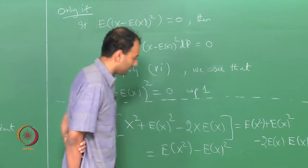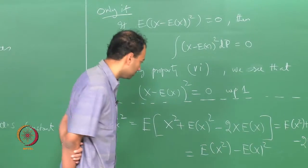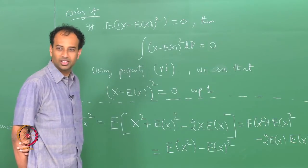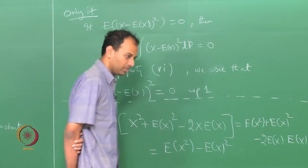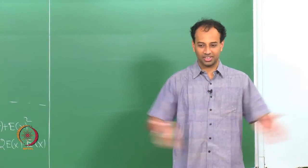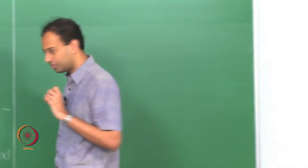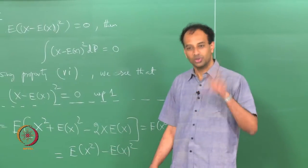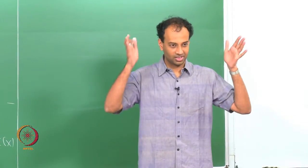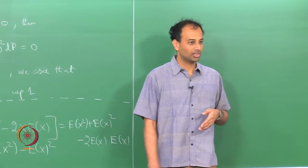In fact, if E[x²] = (E[x])², you can conclude that x is almost surely constant. This is related to Jensen's inequality: for any convex function g, E[g(x)] ≥ g(E[x]). The square function is convex, which is why E[x²] ≥ (E[x])². Jensen's inequality is an important result covered in the homework.